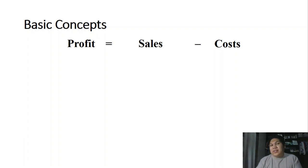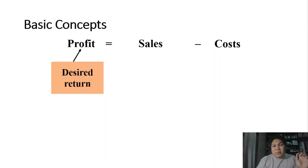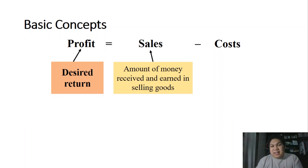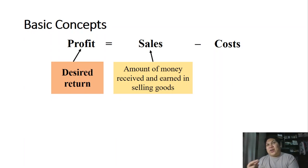When you want to know how much your profit is, you just deduct the costs from your sales. There are certain things to remember about these three terms. Profit is your desired return — for example, if you put up 1,000 pesos in a business and want to earn 200 pesos, that desired return is the profit. Sales is the amount of money received and earned from selling goods. You cannot earn profit without selling something.